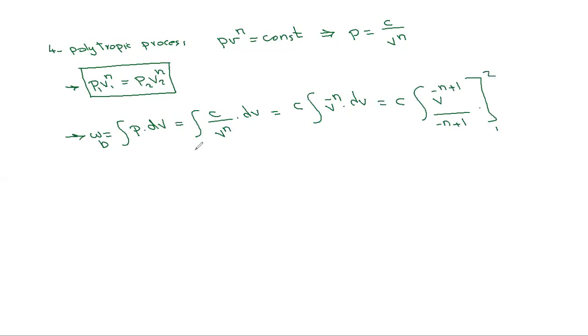The result is constant times V to the power 1-n divided by 1-n, evaluated from 1 to 2. This is PV to the power n times V to the power 1-n divided by 1-n from 1 to 2.